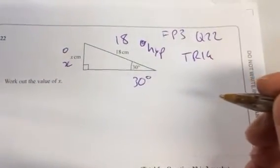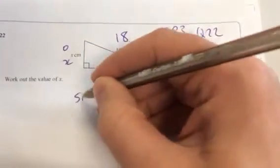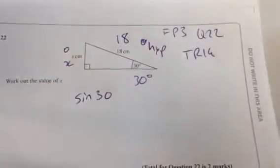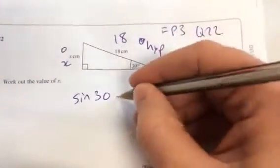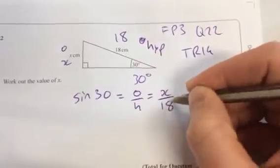So which trig ratio is that? Sine. You're doing SOHCAHTOA, yeah? So sine of 30, that's the angle. We're nearly done. Sine of 30 is opposite over hypotenuse, so it's x over 18. What do I do then?